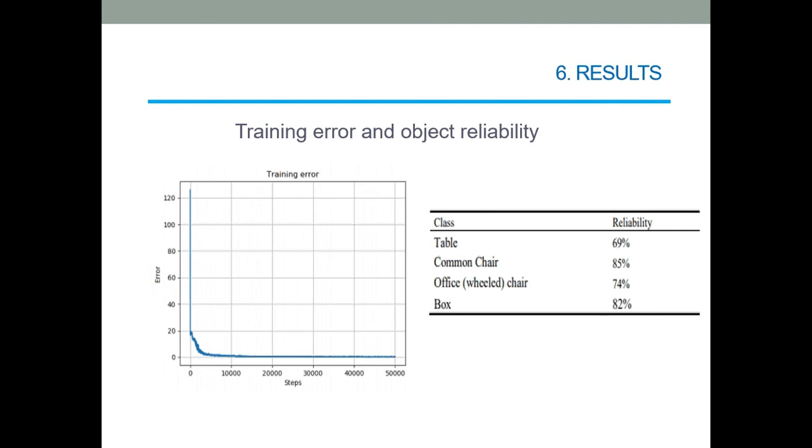In the left side of the slides, we have the training graphic of YOLO training result. In the right side, there is the table that contains the information of the reliability of the detected object in the first YOLO execution.